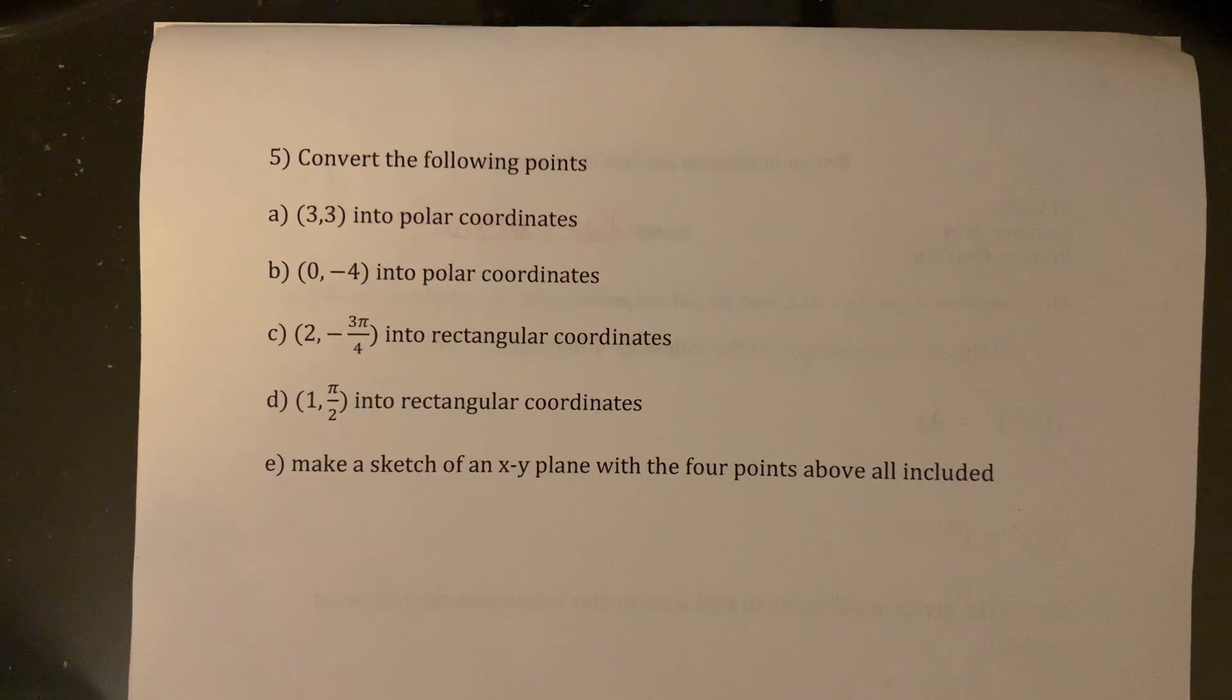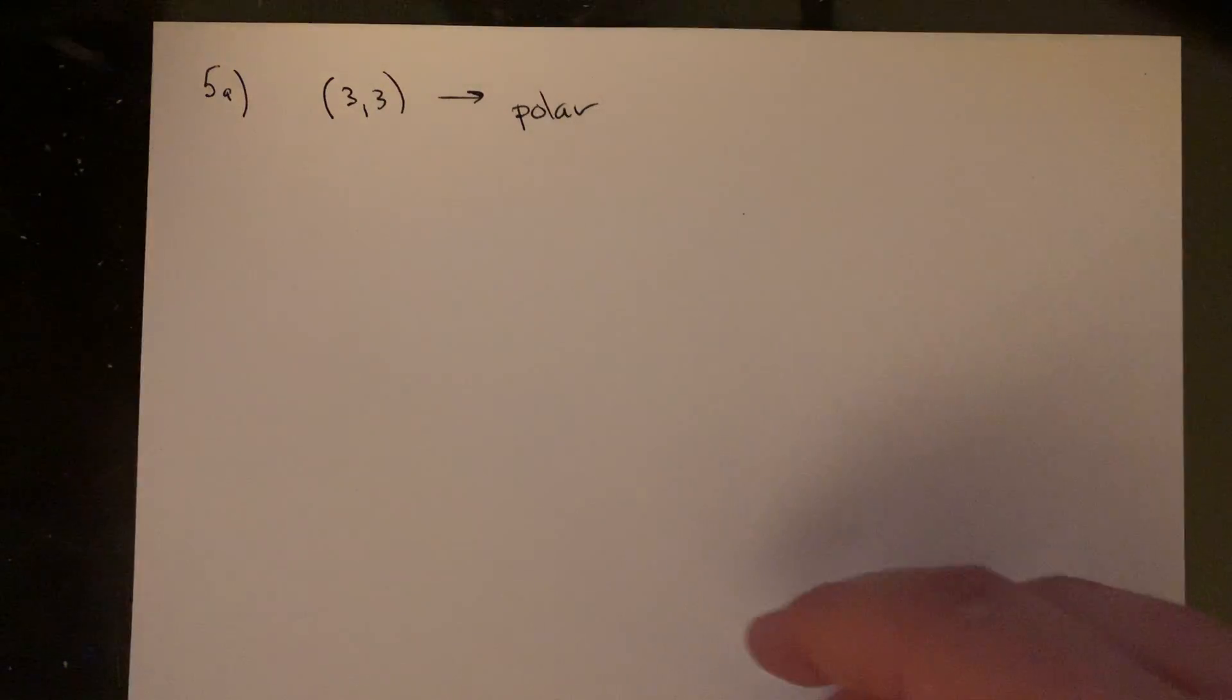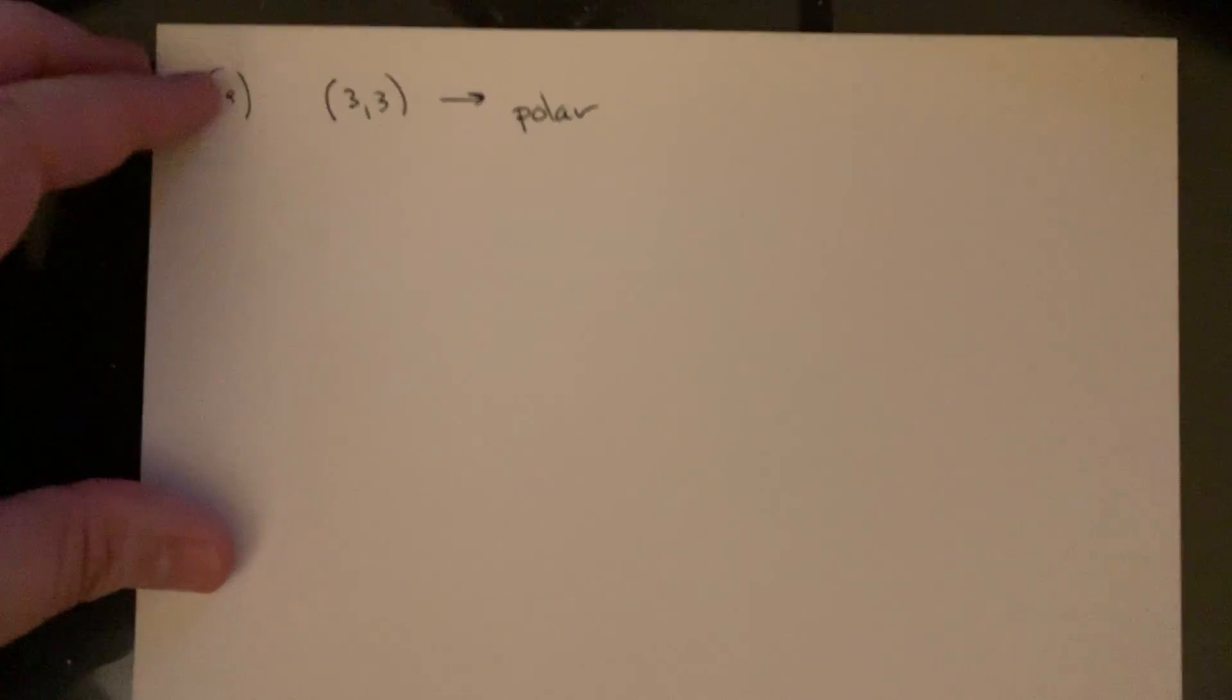I didn't throw any of the polar equations on here. So just a few points to convert either from polar into rectangular or vice versa, and then we're just going to make a sketch of the points at the end. So it shouldn't take too long.